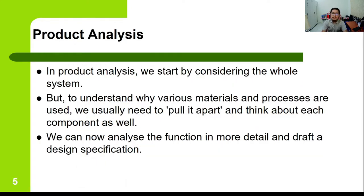In product analysis, we start by considering the whole system. We need to understand the various materials and processes used in a product, pull it apart, and think about each component. From there we can analyze in more detail and draft more design specifications — that is, drafting the translation table.